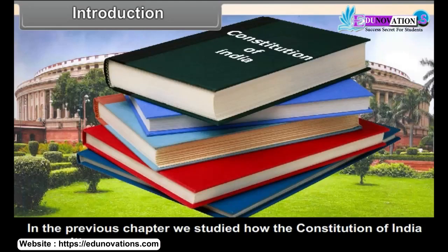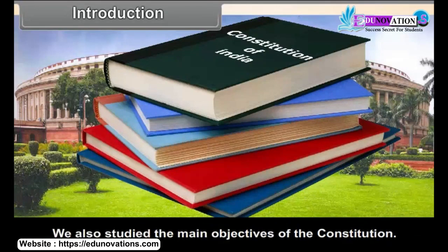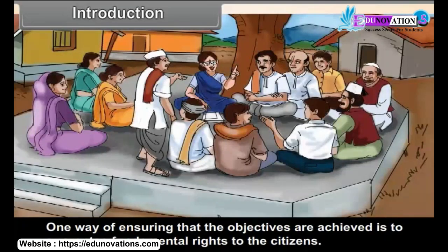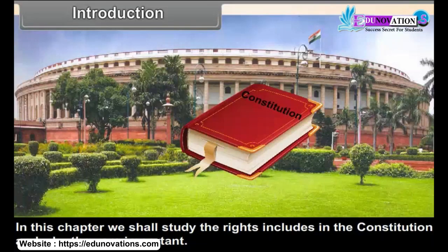Chapter 6: Fundamental Rights and Duties. In the previous chapter, we studied how the Constitution of India was written. We also studied the main objectives of the Constitution. One way of ensuring that the objectives are achieved is to guarantee fundamental rights to the citizens. In this chapter, we shall study the rights included in the Constitution and why they are important.